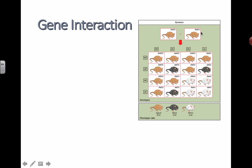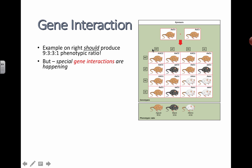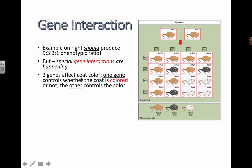So we should be producing the 9 to 3 to 3 to 1 typical phenotypic ratio, but special gene interactions are actually happening. So I'll tell you two things here: there are two genes that affect coat color.